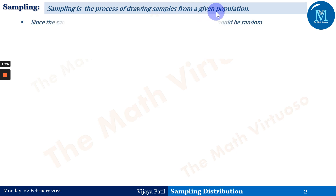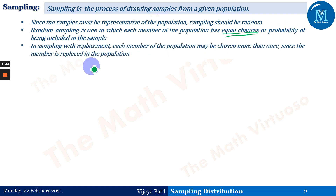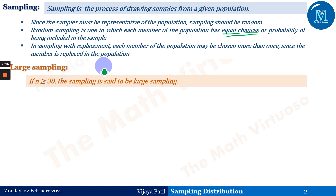Since samples must be representative of a population, sampling should be random. Random sampling is one in which each member of the population has an equal chance or equal probability of being included in the sample. In sampling with replacement, each member of the population may be chosen more than once since the member is replaced in the population. There are different types of sampling — purposive, random, stratified, or systematic sampling — but today we are not going into those types.